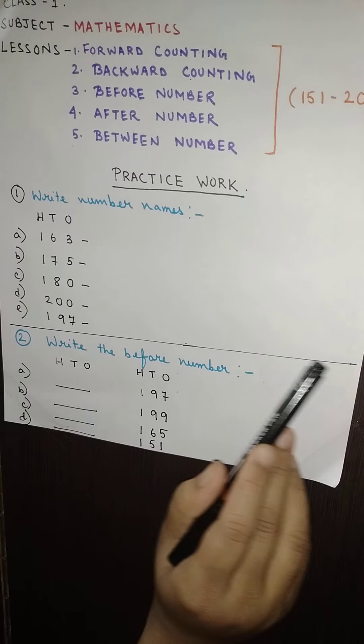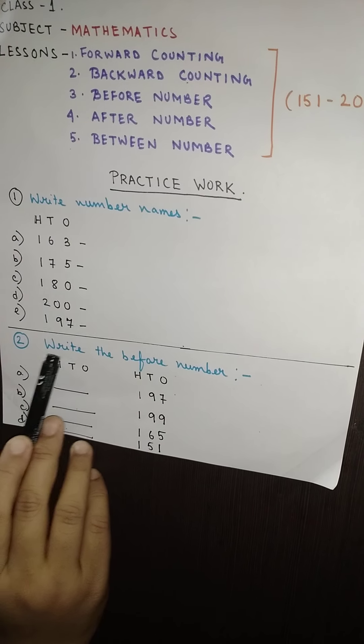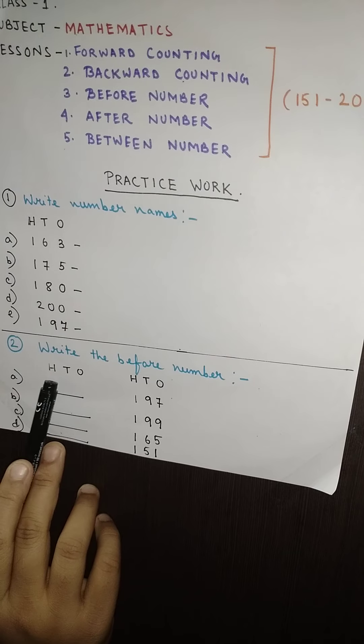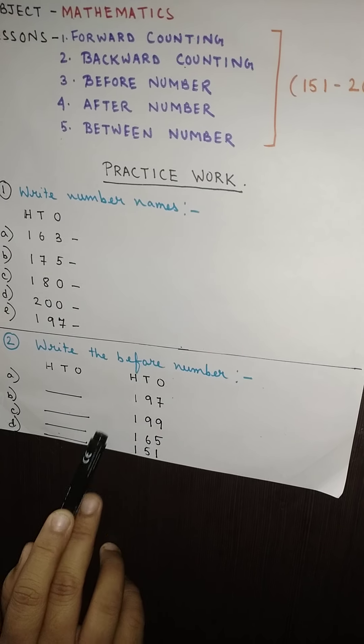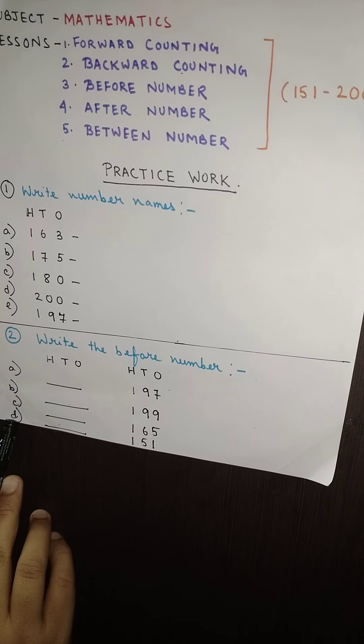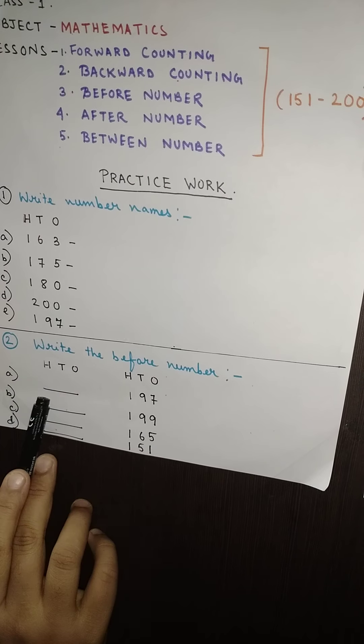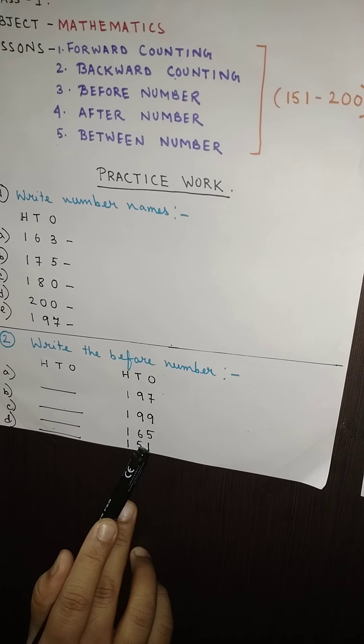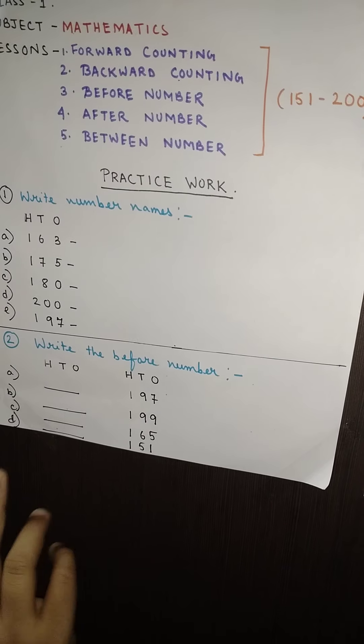After you finish you will be drawing one ending line and write number 2: write the before number. Here you can see what I have done. I have written H T O and leave one box, and again you will write one H T O. A, B, C, and D: 197, one dash in the before, 199, 165, and 151. Again one ending line.